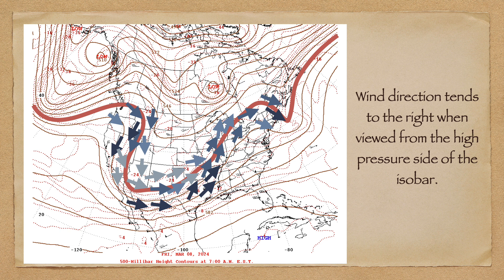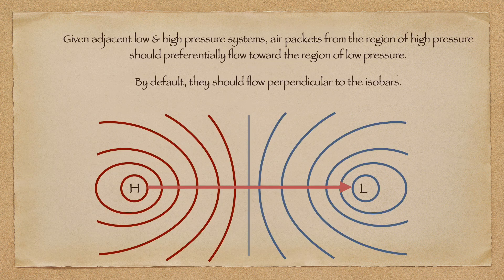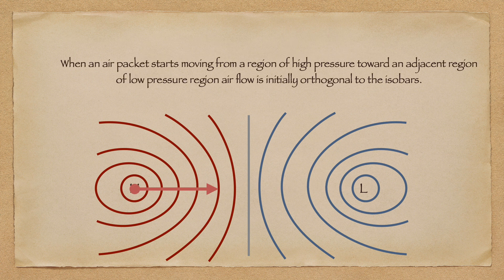There are some minor deviations because of topography and boundary layer effects, but in general this pattern holds true. When viewed from the high-pressure side of the isobar — which is to the south over the Caribbean — the wind flows to the right. This pattern is observed to hold true for all weather systems in the Northern Hemisphere. In the Southern Hemisphere, the winds flow to the left when viewed from the high-pressure side of the isobar. Given a high-pressure system and a low-pressure system that are next to one another, one would expect that by default the air would flow directly from the high-pressure to the low-pressure system, traveling perpendicular to the isobars, not parallel to them.